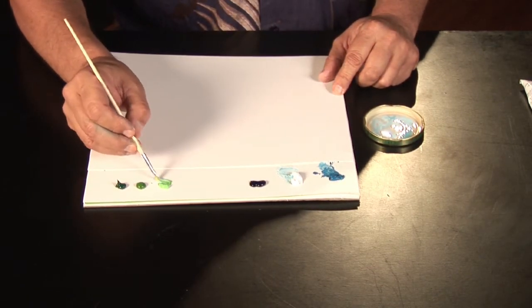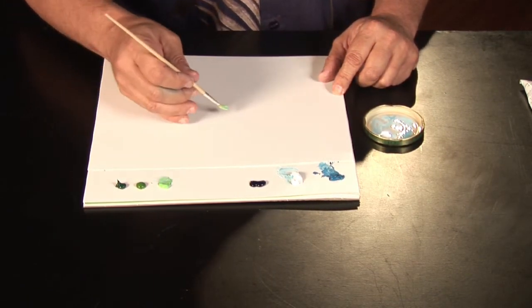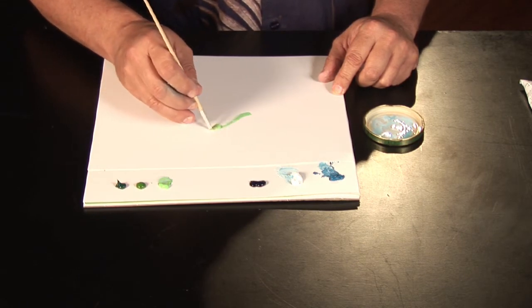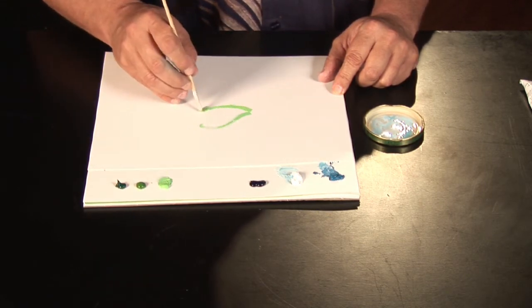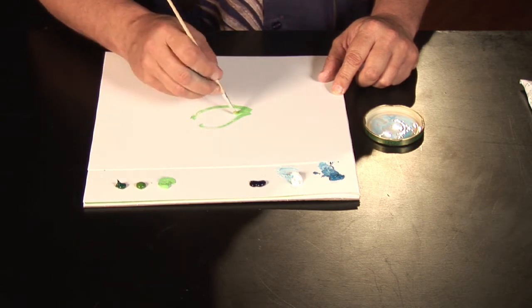I'm going to go ahead and add the values of the leaf, which are a light green. Just add the base on there, spread it out.